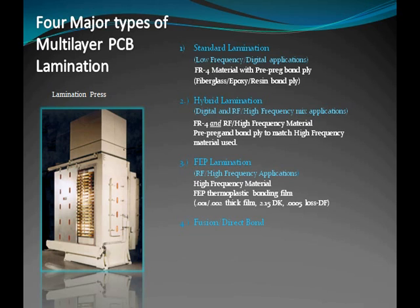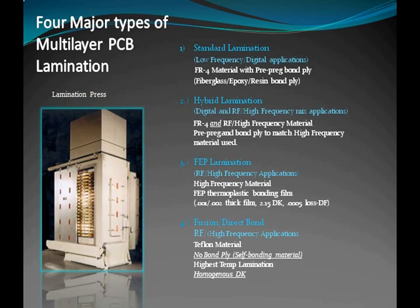The fourth type of lamination is fusion or direct bonding, used only in the highest performance applications. In fusion bonding, only very high-performance Teflon PTFE material can be used. No pre-preg or bond ply is used; rather, the material is self-bonding when subjected to very high heat and a very lengthy, carefully controlled lamination cycle. Cooling must be equally carefully controlled, and cost is high due to material and labor. Transline Technology is one of only an elite few PCB suppliers in the country successfully producing fusion bonded boards today.